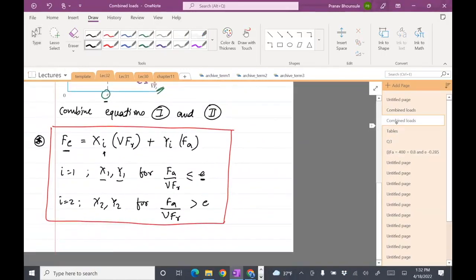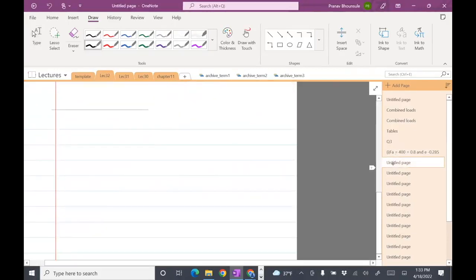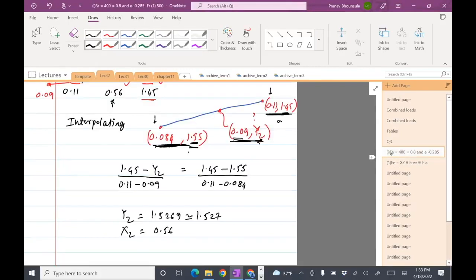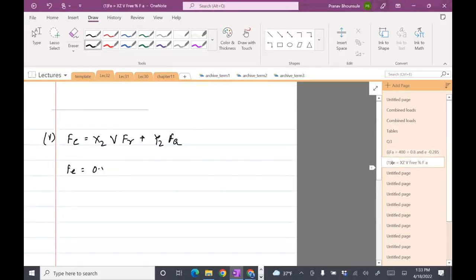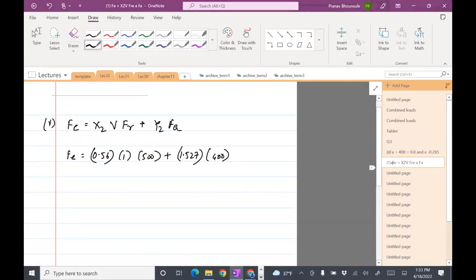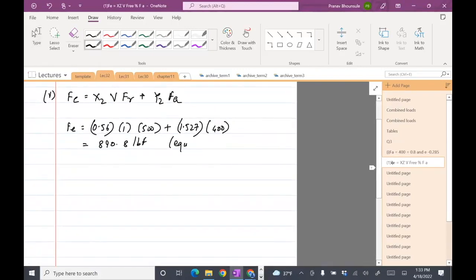So we've computed X2, Y2. And now we are set to compute FE, which is this formula. So part number 5, compute FE equals X2 VFR plus Y2 FA. So FE is, I'm going to substitute in the values now. I have 0.56 times V is 1, FR was 500, plus Y2 is 1.527 times FA is 400. So solving this could be 890.8 LBF. This is our equivalent load.